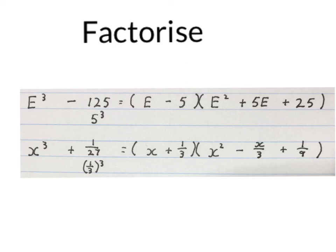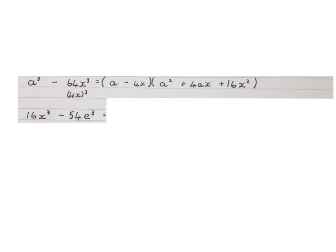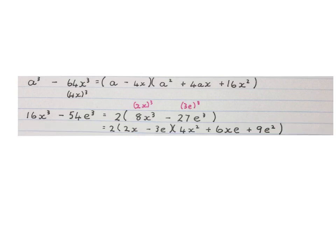Please stop the video and get your head around this. Here is again the difference of two cubes. First you must know that 64X cubed is 4X all cubed. Then your two final factors will look like this — please stop the video and see if it's right. Next, to factorize the following expression, first remove a common factor of 2 from both terms. Then again we have the difference of two cubes, which ends up looking like this — so factorizing gives us three factors in total.